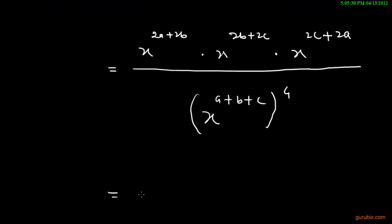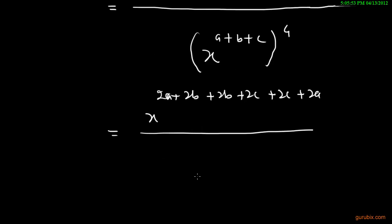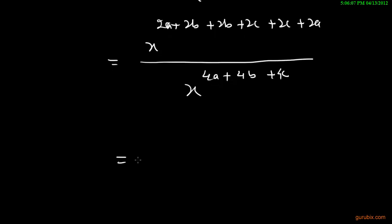Now we shall add the powers because the bases are equal. Then it will be x raise to 2a plus 2b plus 2b plus 2c plus 2c plus 2a, and in denominator it will be x raise to 4a plus 4b plus 4c. In numerator it will be x raise 4a, because we can add 2a plus 2a to get 4a.